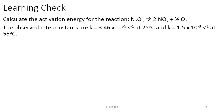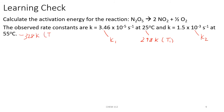Calculate the activation energy for the reaction: dinitrogen pentoxide forming 2 nitrogen dioxide and one-half oxygen. The observed rate constants are K equals 3.46 times 10 to the negative 5th inverse seconds at 25 degrees Celsius, and K equals 1.5 times 10 to the negative 3rd inverse seconds at 55 degrees Celsius. Our 25 degrees Celsius would be the same as 298 Kelvin, so we can call that our T1, and the corresponding K would be our K1. Our other K would be K2 at 55 degrees Celsius, which is also 328 Kelvin, and that would be our T2 value.